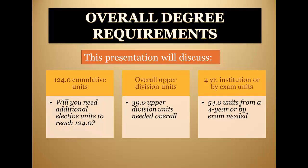The first requirement is the need to reach 124 cumulative units. The second is the overall upper division requirement of 39 units, and the last is the 54 units from a four-year institution or by exam. Before we begin, let's briefly revisit the recommended steps to completing your degree on the next slide.